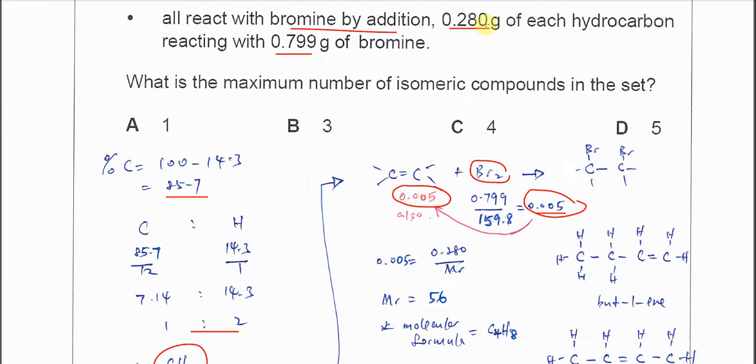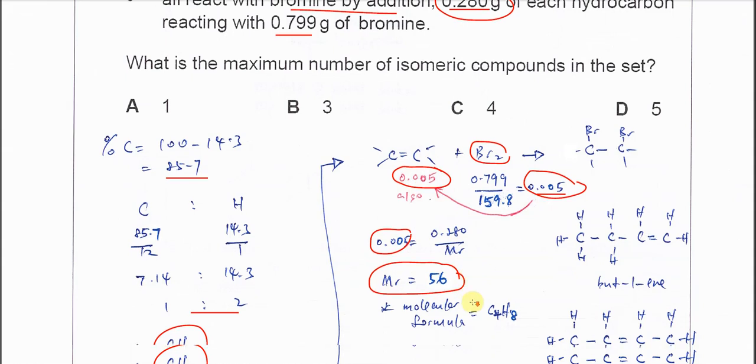The question gives 0.28 grams of hydrocarbon reacted. Using n = m / M, where n is the moles we calculated (0.005) and m is the mass given (0.28g), we can find the molar mass of the hydrocarbon. The molar mass is 56, so the multiplier is 4.